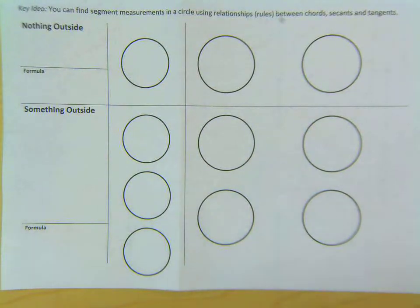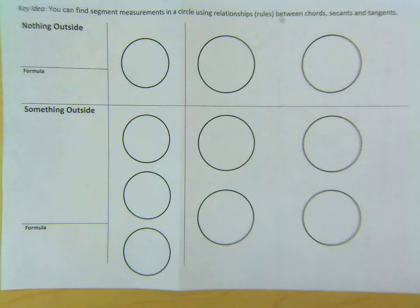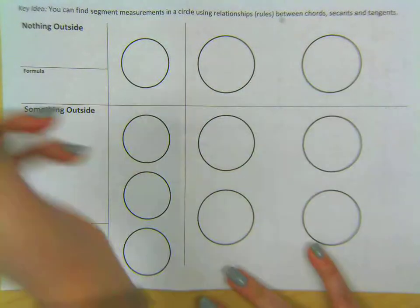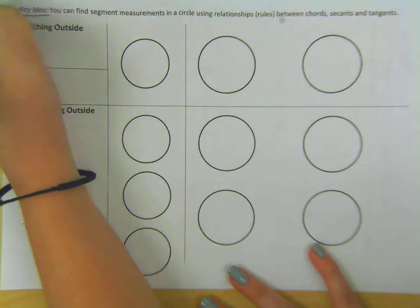Hello, this is Ms. Ferlazzo here. In this video, we're going to look at the relationship between chords, secants, and tangents in order to find missing segment measurements in our circle. That is our key idea.